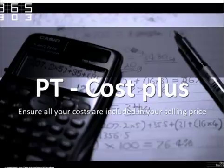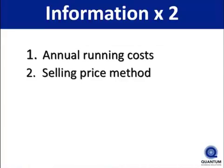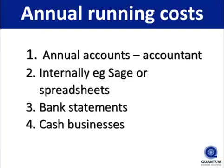One of the main causes of selling prices being set too low is that people do not include all their costs in their selling price. This may apply to your business, and I'd like to make you aware of it. I'm going to quickly go over two examples — a service business and a product business. To look at this area, you need your annual running costs, which you can get from your accounts, Sage, or bank statements, and you need your selling price method.